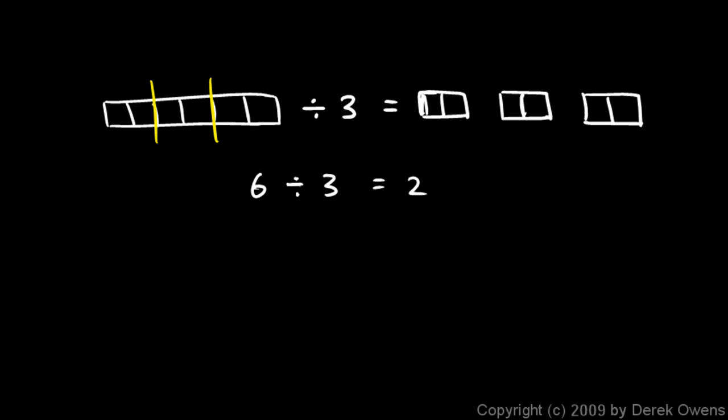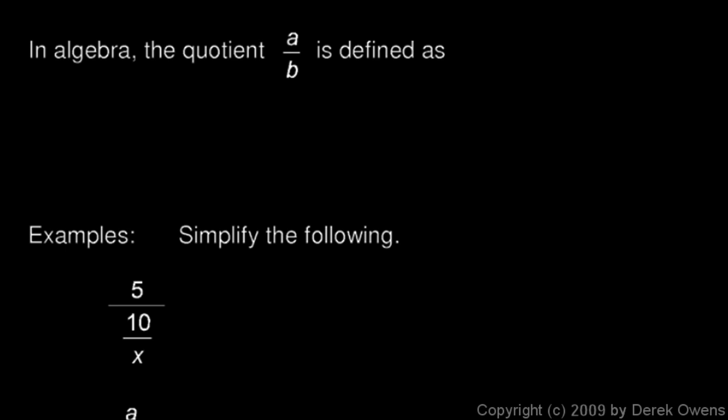That's a fine way to think about division and that works well with ordinary numbers or simple objects. But that doesn't work well with variables or complicated expressions that we run into in algebra. In algebra, the quotient a over b is defined as a times one over b, a times the reciprocal of b. That's how division is literally defined.